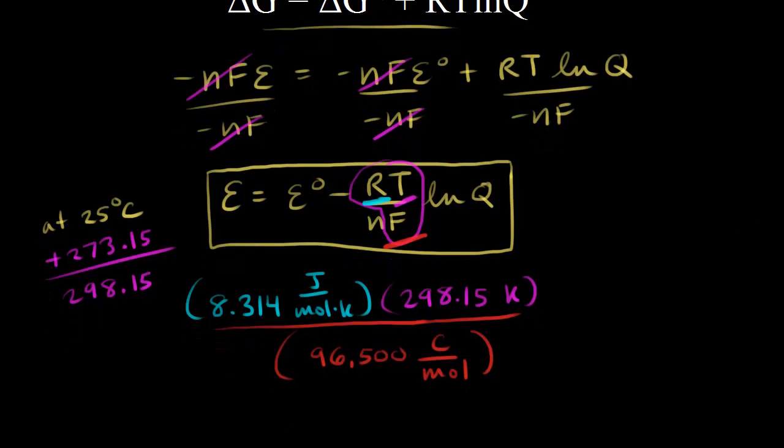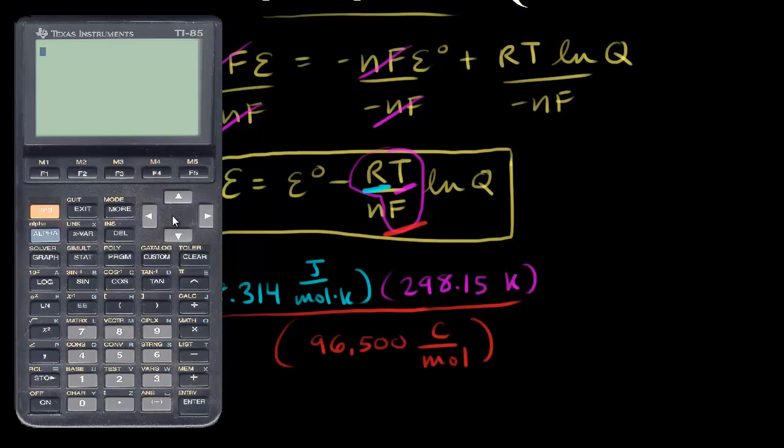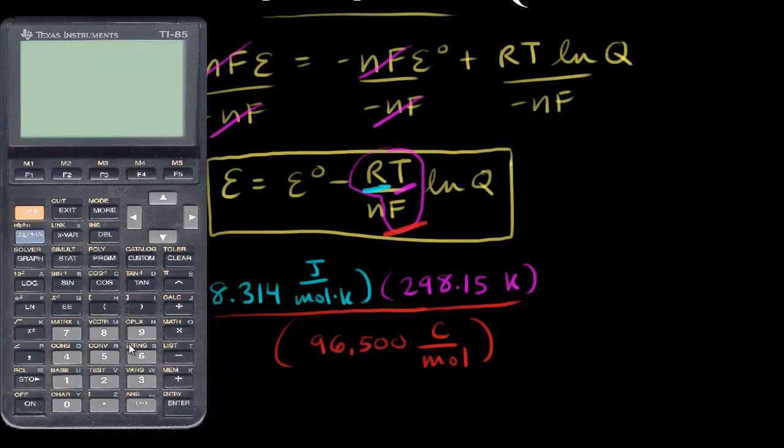Let's get some more space and get out the calculator. We've already done this calculation in an earlier video, but I'm gonna go ahead and do it again for this Nernst equation video. So 8.314 times 298.15, we'll need to divide that by Faraday's constant, 96,500. So that gives us 0.0257.